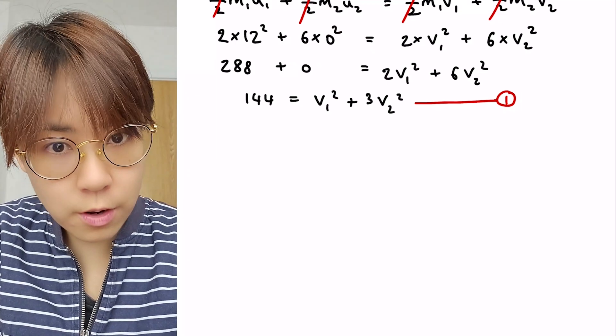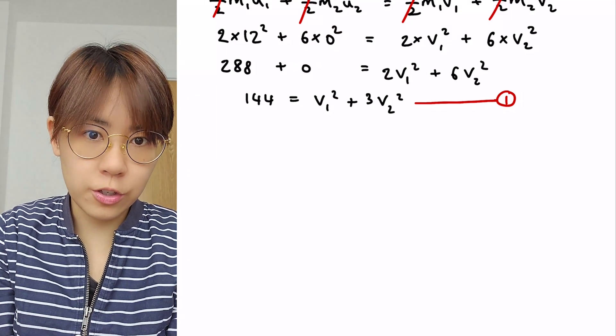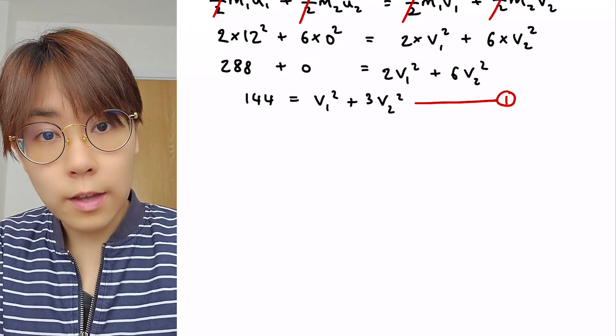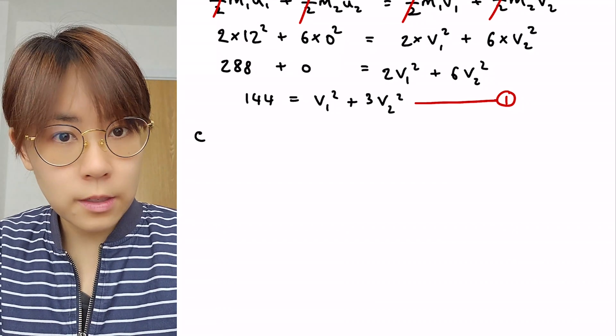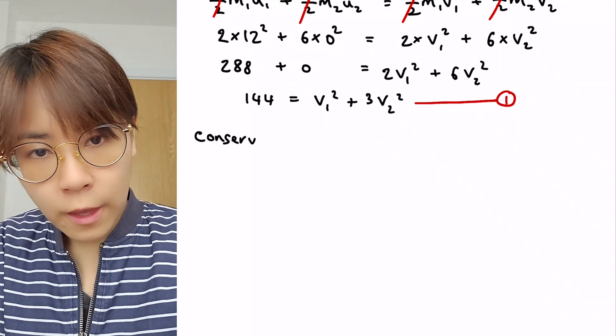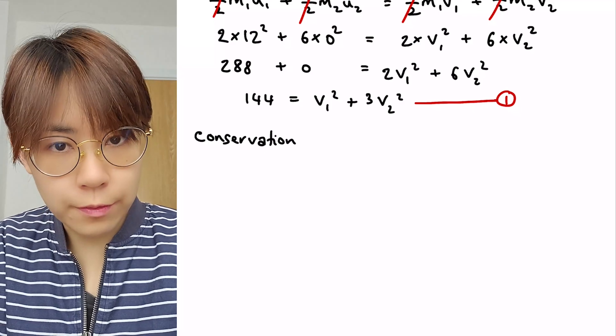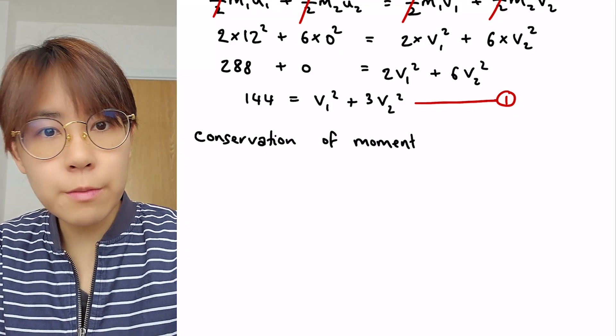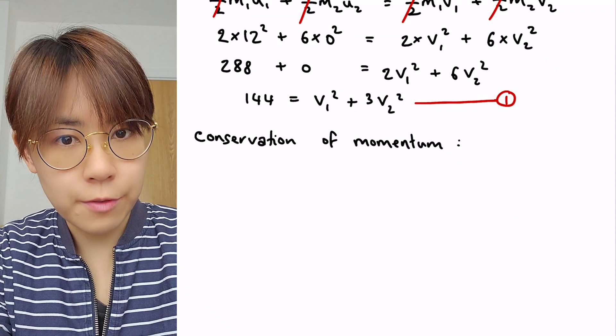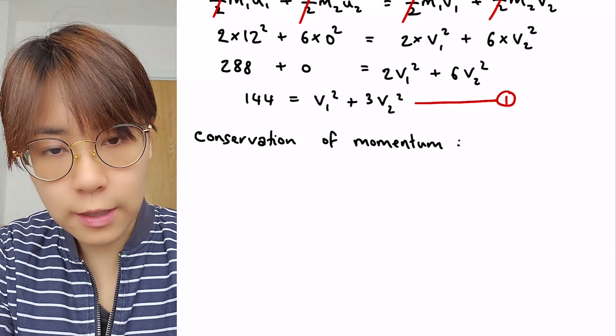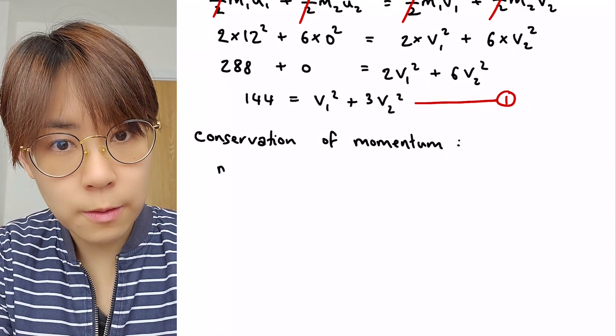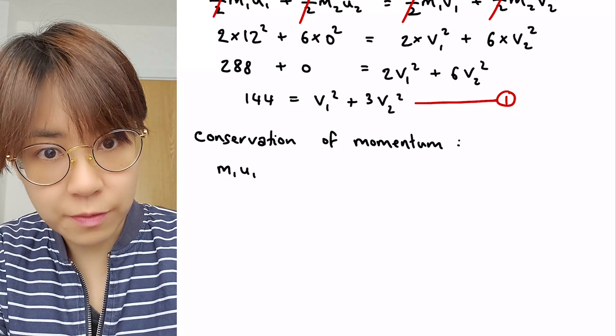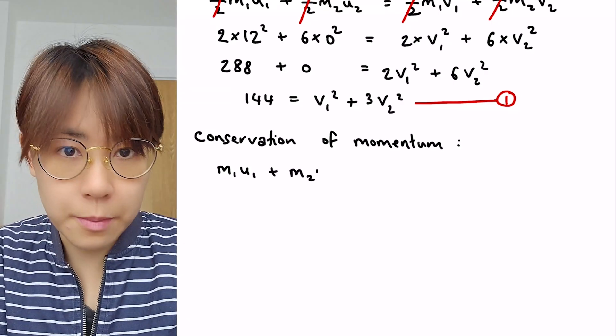To solve two unknowns, we require two equations. But luckily, we know that in collisions, momentum is also conserved. So we're going to use the generic equation for the conservation of momentum. If you need a reminder of where this comes from, do check out my previous lesson on conservation of momentum. I'll put a link in the description for you.